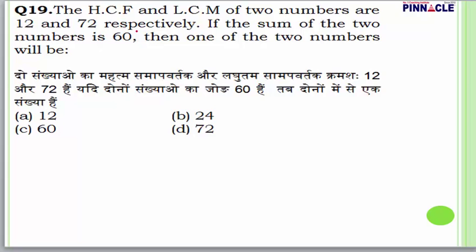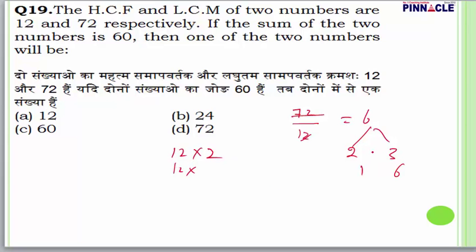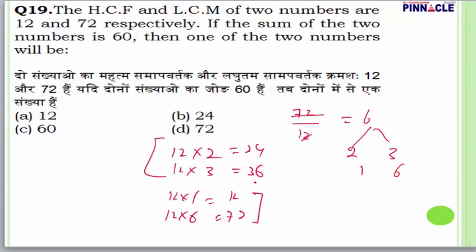Question number 19: HCF and LCM of two numbers are 12 and 72 respectively. Sum of the two numbers is 60. Find one of the numbers. Divide LCM by HCF: 72/12 = 6. Factor pairs of 6: (1,6) and (2,3). Possible number pairs: (12,72) or (24,36). Since sum = 60, the pair is 24 and 36. One number is 24. Answer: 24.